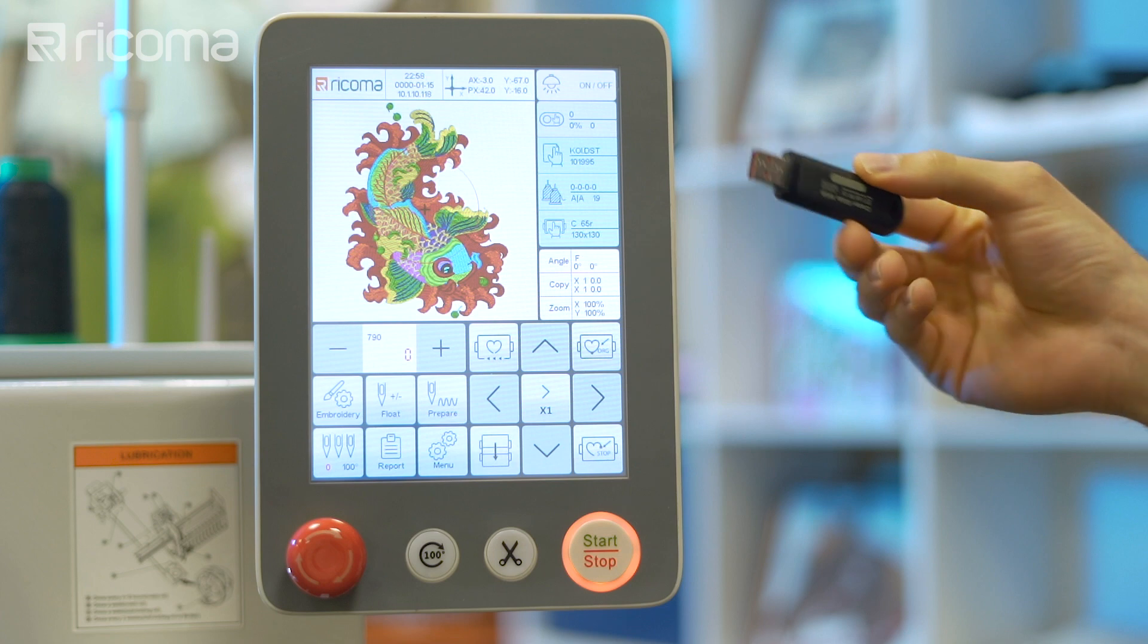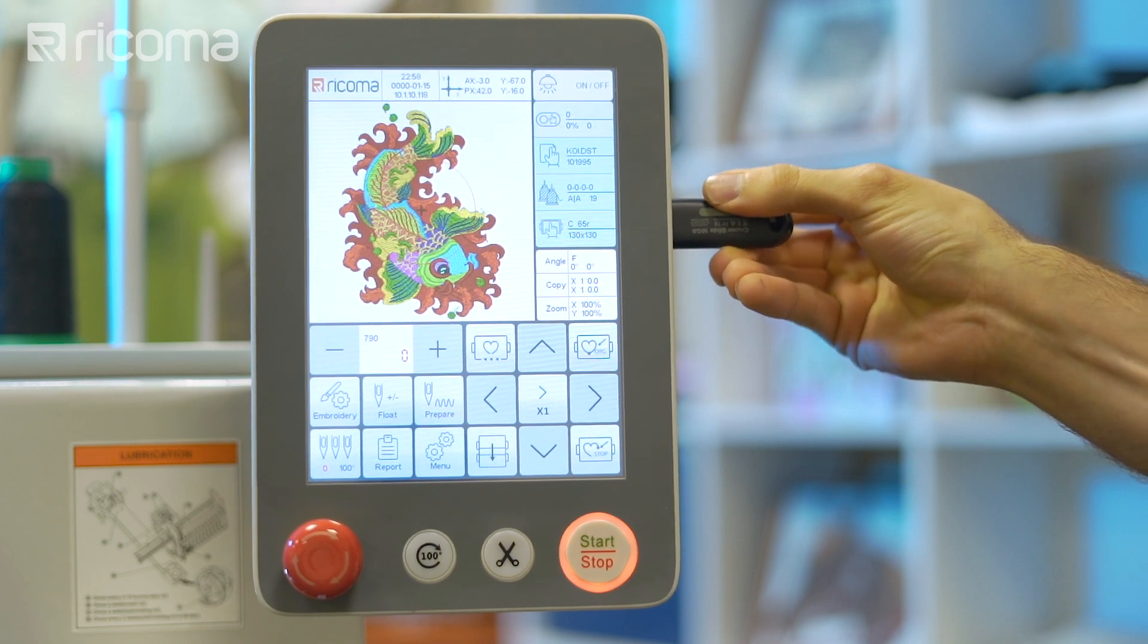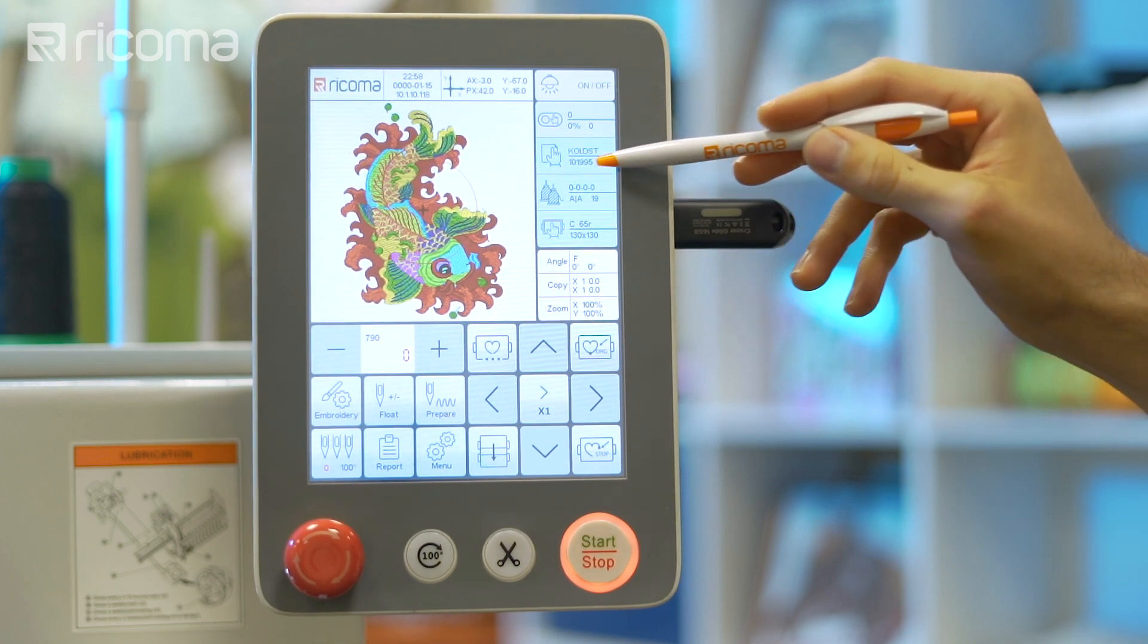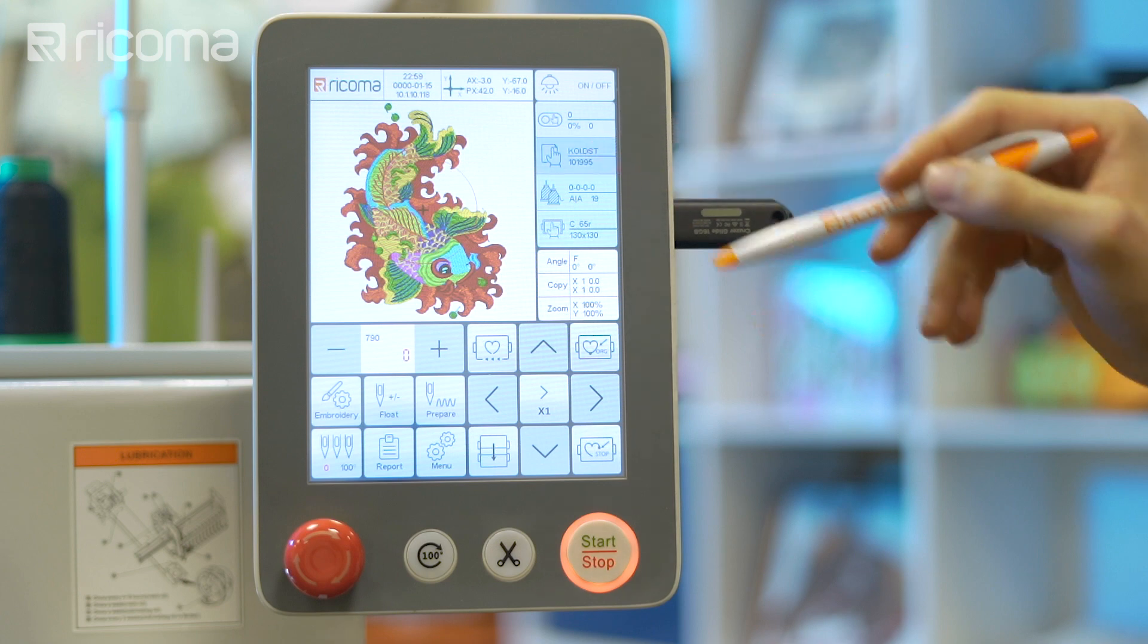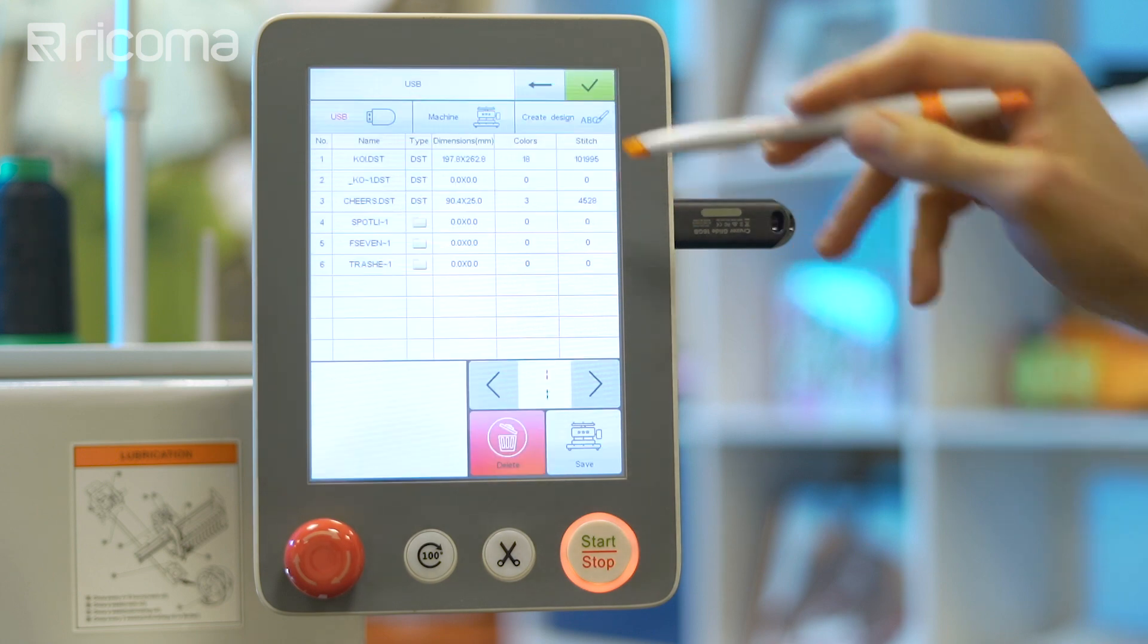First, insert your USB stick into the machine's USB port. Then, with embroidery mode unlocked, select the design menu to enter the USB slash embroidery machine's interface.